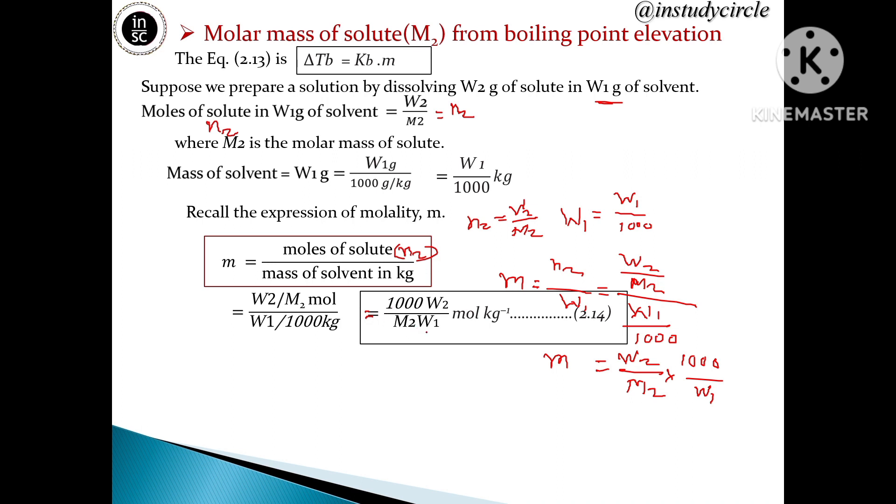Now substituting the value of m into equation 2.13, we get ΔTb = Kb × 1000W₂/(M₂W₁). Rearranging this equation: M₂ = (Kb × 1000 × W₂)/(ΔTb × W₁).